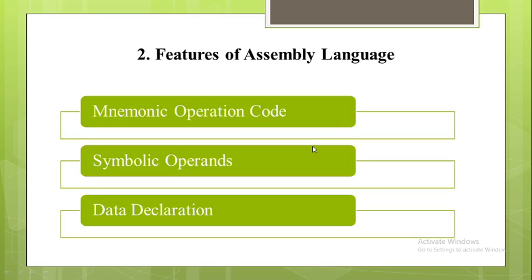After this we will see the features of assembly language. Assembly language uses mnemonic operation codes for machine instructions instead of numeric operation codes. For example, instead of the numeric code 01, the mnemonic code ADD is used to specify addition. Likewise, instead of the numeric code 02, the mnemonic code SUB is used to specify subtraction.